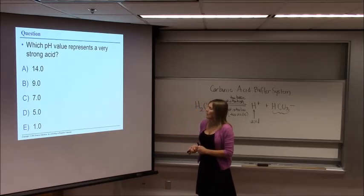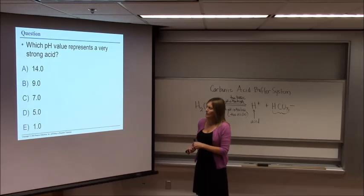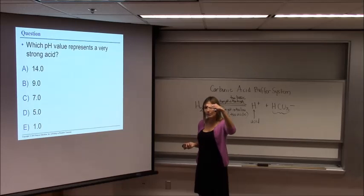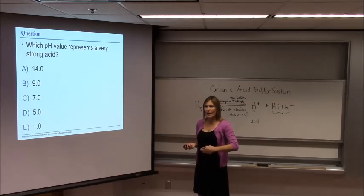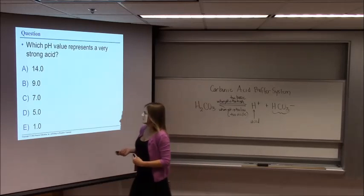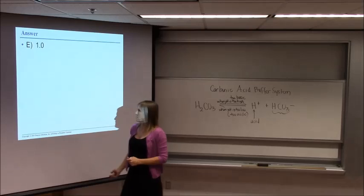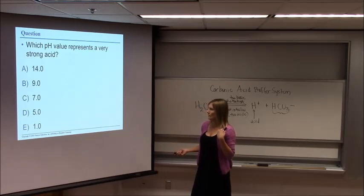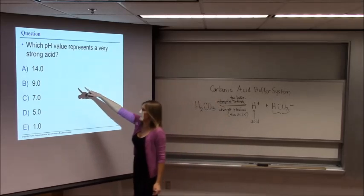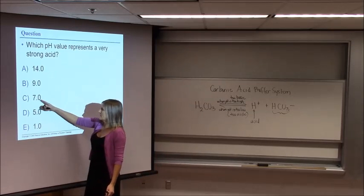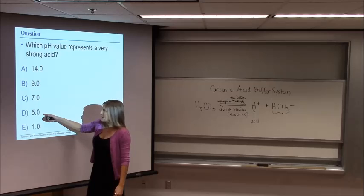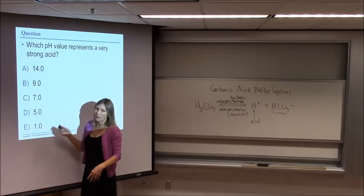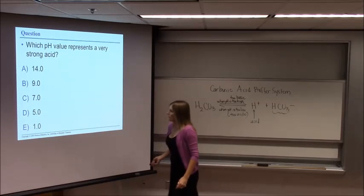So which pH value represents a very strong acid? So remember, higher the number over 7 is basic. Below 7 is an acid, so the lowest number you could get would be the strongest acid. So the correct answer is 1. 1.0 would be the strongest acid of those listed. 14.0 would be the strongest base. 7 would be neutral. 5 would be a somewhat weak acid. 9 would be a relatively weak base, relative to 14.